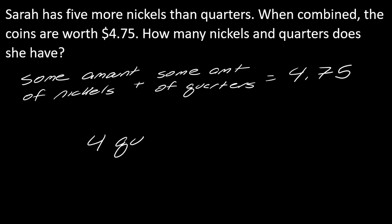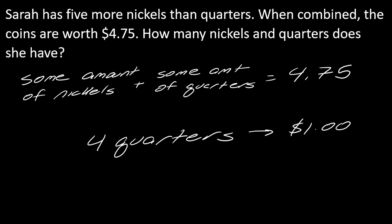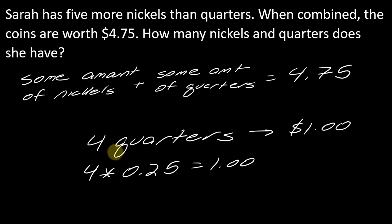We have to be careful here. If I told you I have four quarters, you would know that that is one dollar. How do you know that? Because you're taking four times the twenty-five cents, and that gives you the dollar. So this idea of having to multiply the quantity times the worth of the coin — that's what we're going to have to do here. That's our game plan.